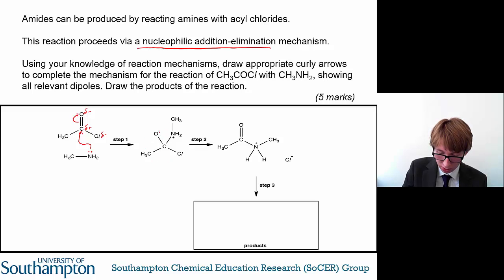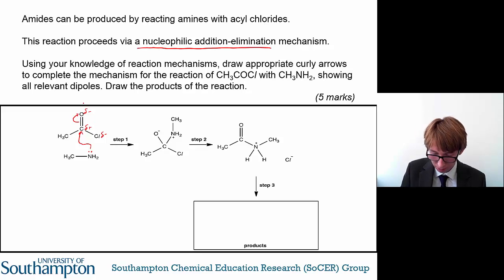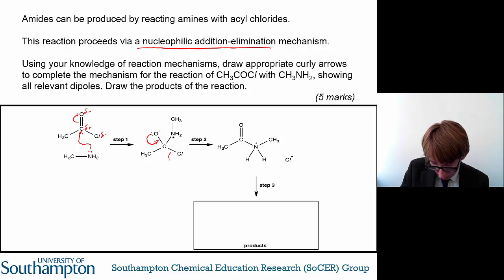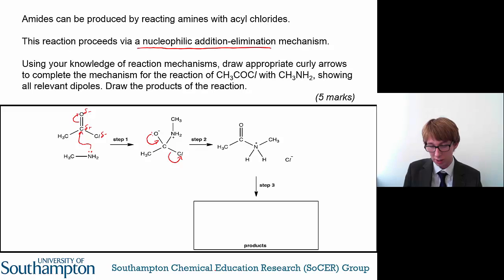You can see in step two that you form a negatively charged oxygen atom — an ion — because you've broken the pi bond and the electrons are delocalized onto the oxygen atom. Then the negatively charged oxygen kicks down its electron pair, reforming the pi bond. And because chloride ions are so stable in solution, it kicks out the chloride ion. So the bond between the chlorine and the carbon is broken — the electron pairs in the carbon-chlorine bond move onto the chlorine to form the chloride ion.